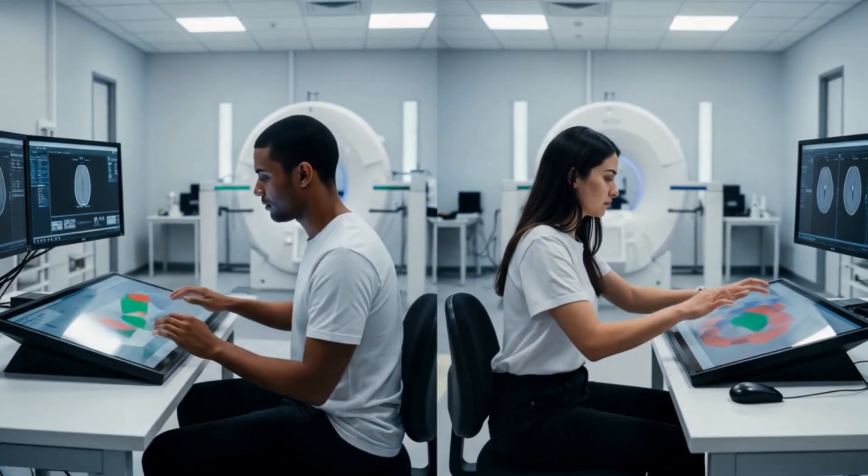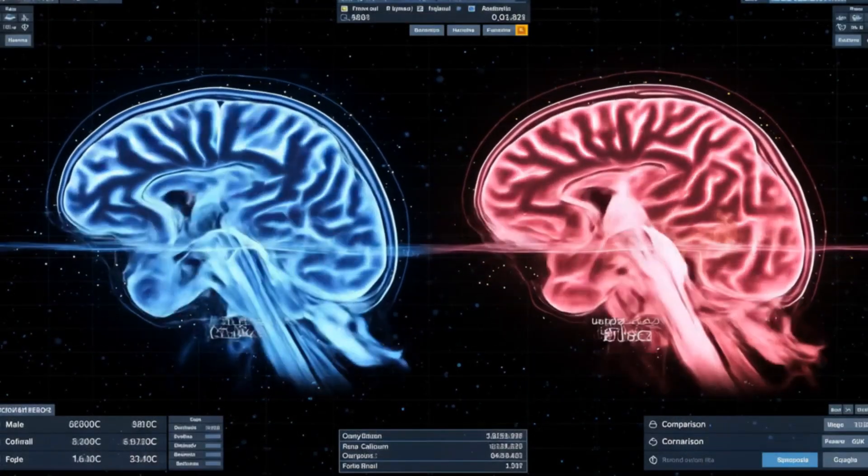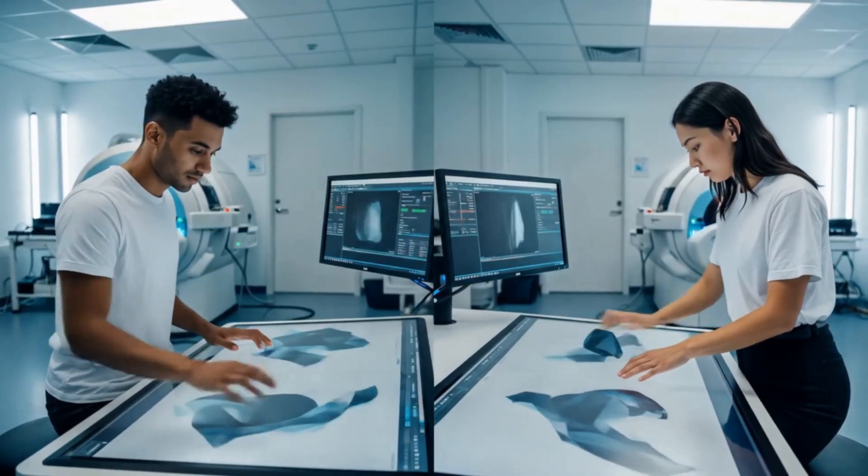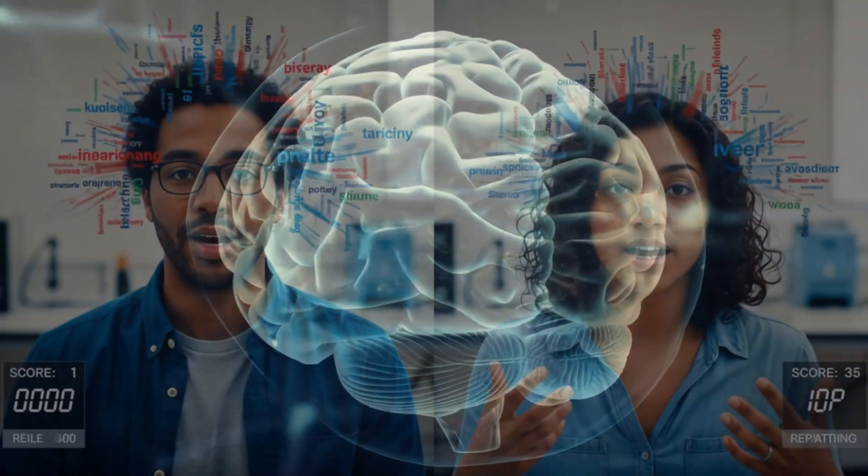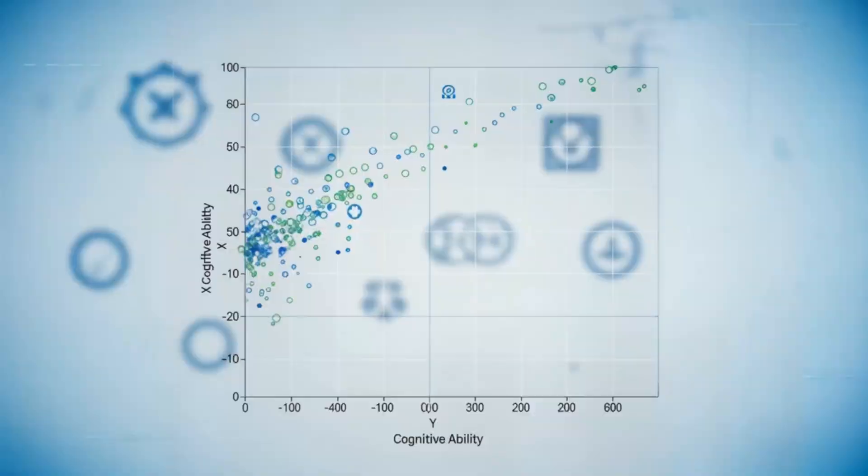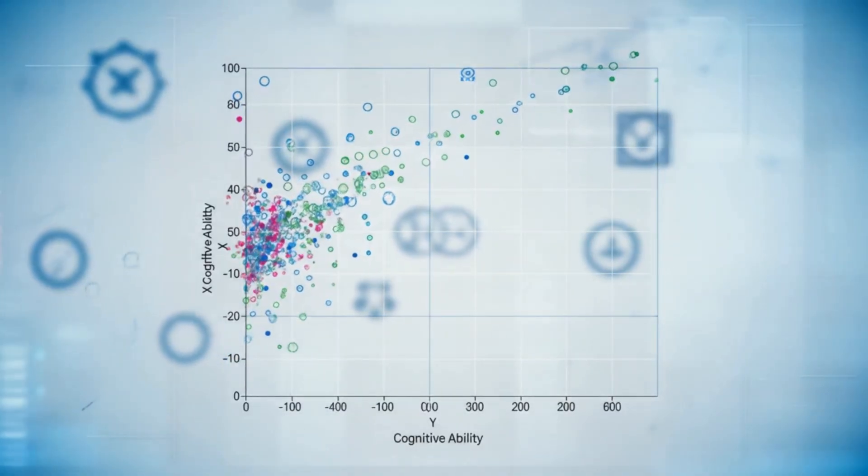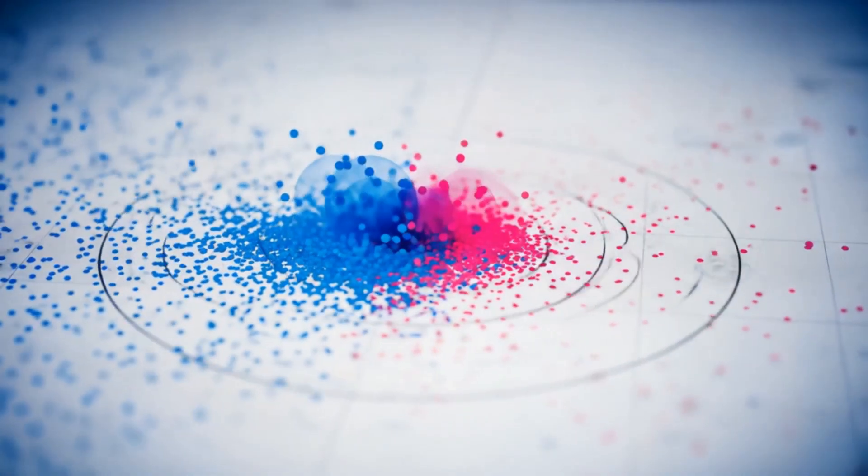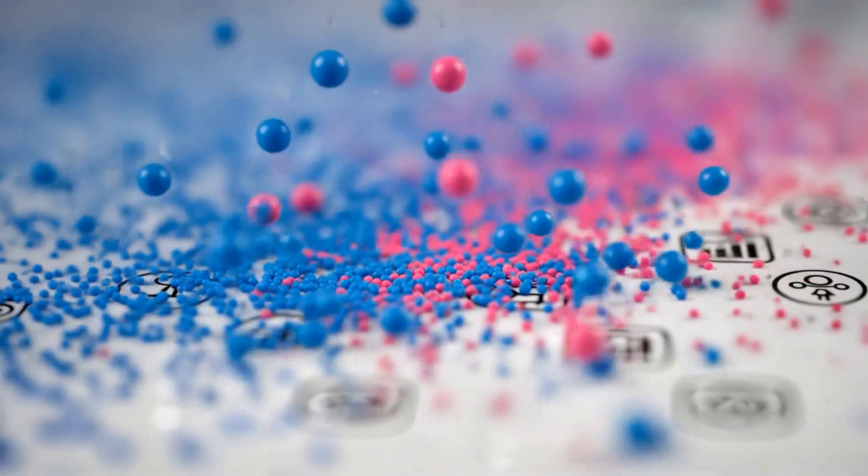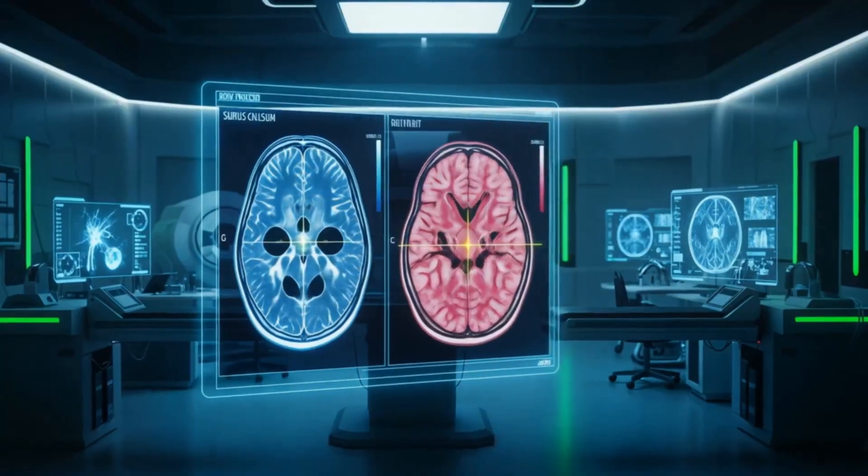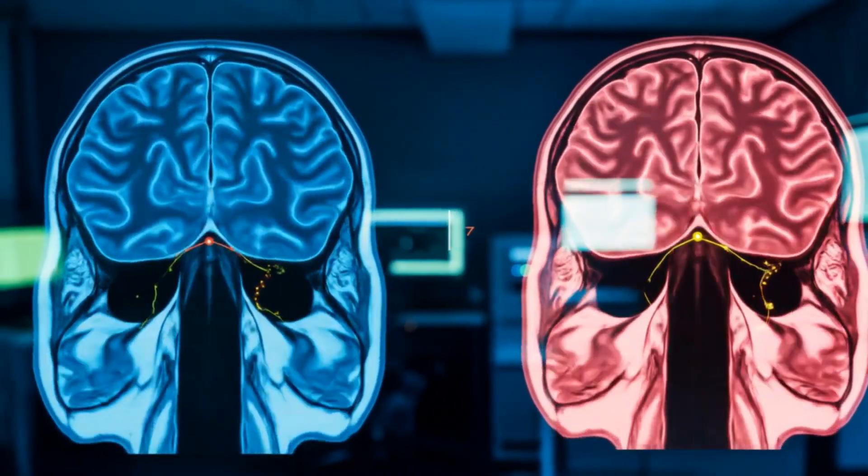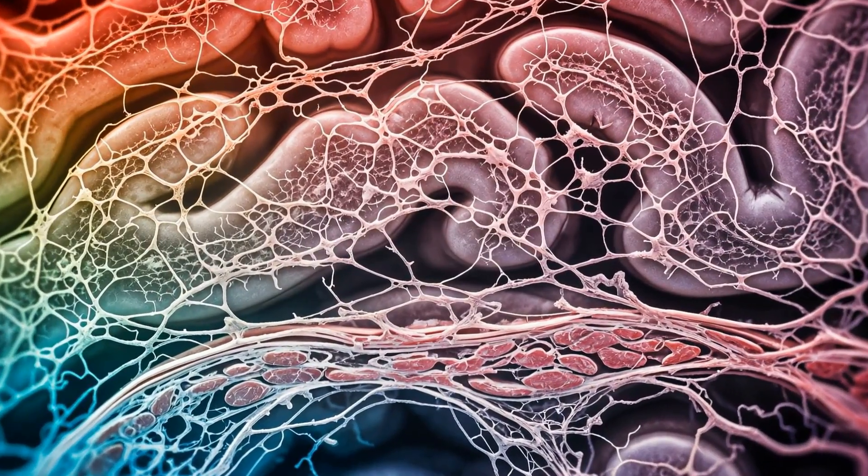Let's think about this. If male and female brains do have some average differences, does that mean men and women think differently? Well, some studies have found small average differences in certain cognitive abilities. For example, some research suggests that males might perform slightly better on certain spatial tasks, while females might have an edge in verbal fluency and emotional recognition. But the crucial part, and I can't stress this enough, the differences between individuals are way, way bigger than any average difference between the sexes. It's like if you plotted these abilities on a graph, you'd see two big overlapping blobs rather than two distinct groups. And many of these differences might be more about socialization and experience than innate biology. Plus, our brains are incredibly adaptable. Practice can dramatically change our abilities in any of these areas.